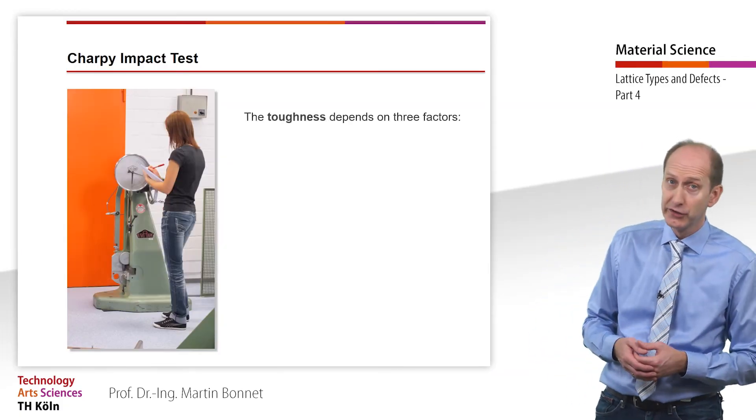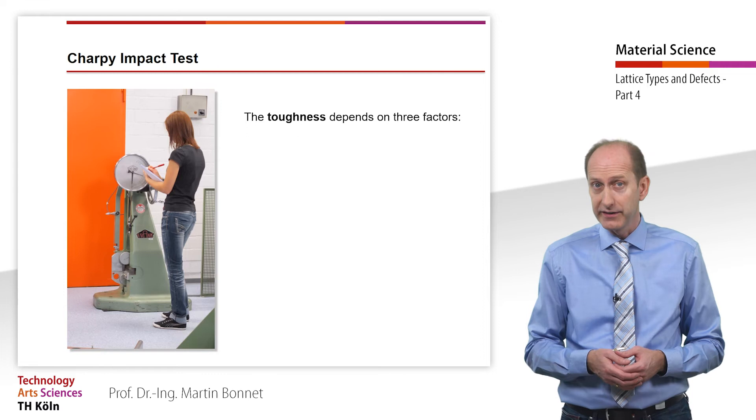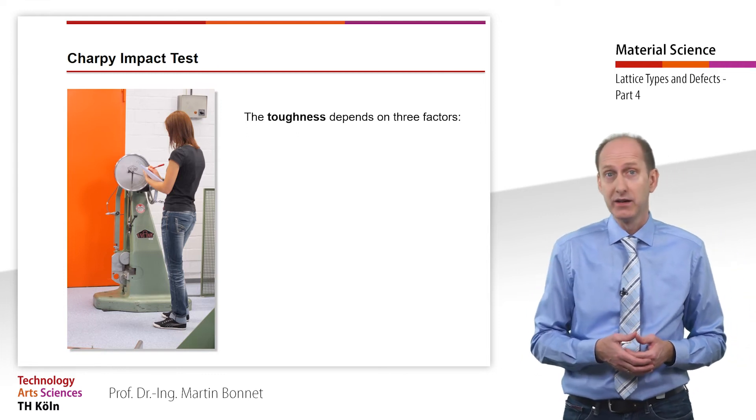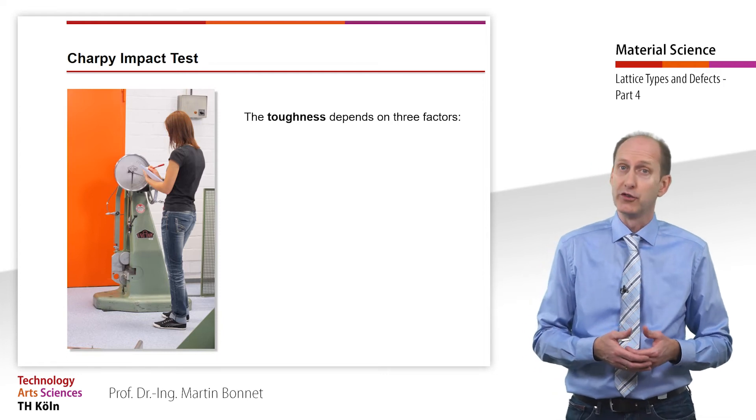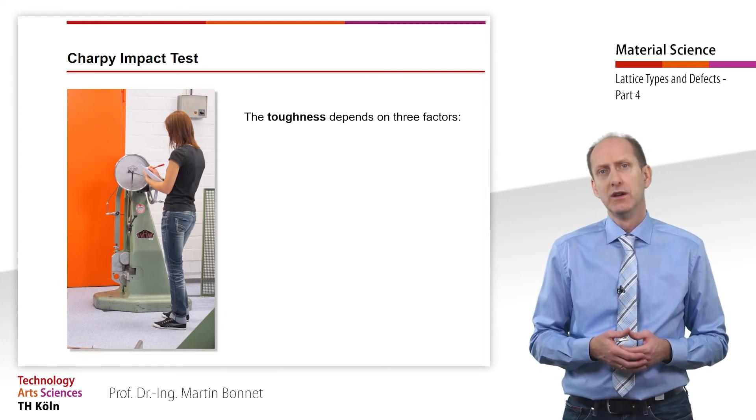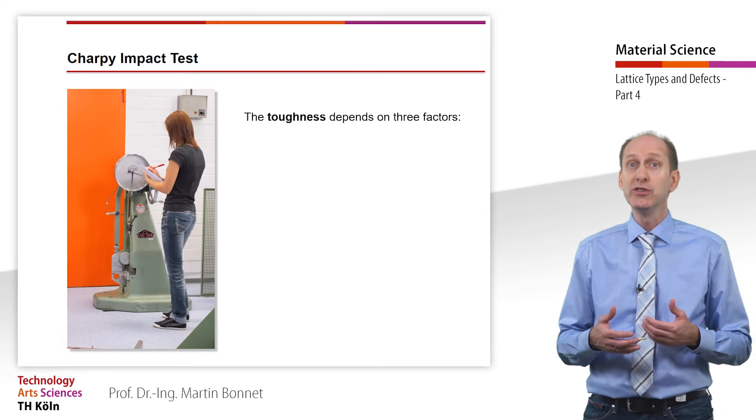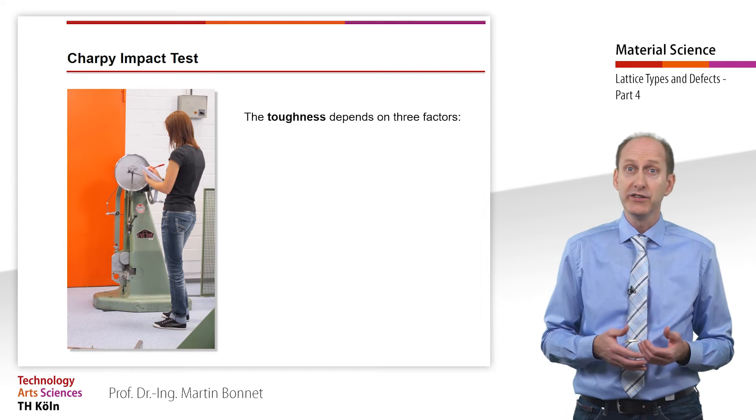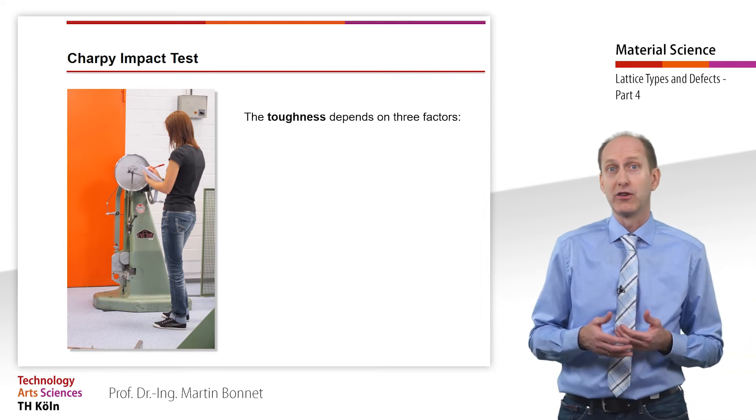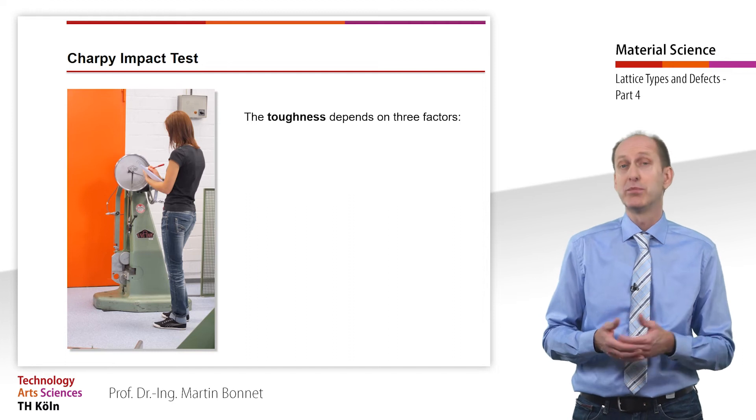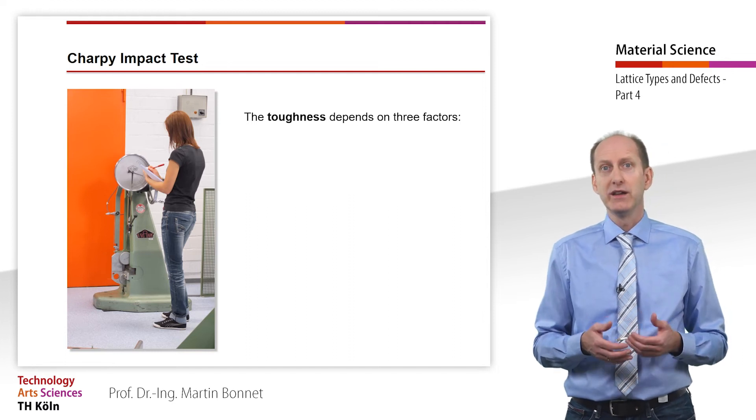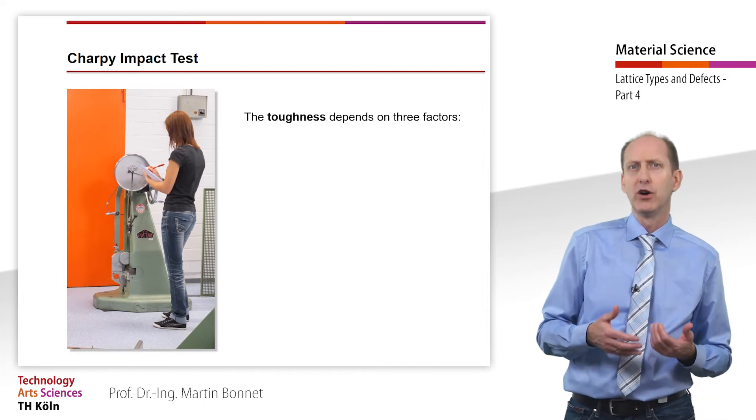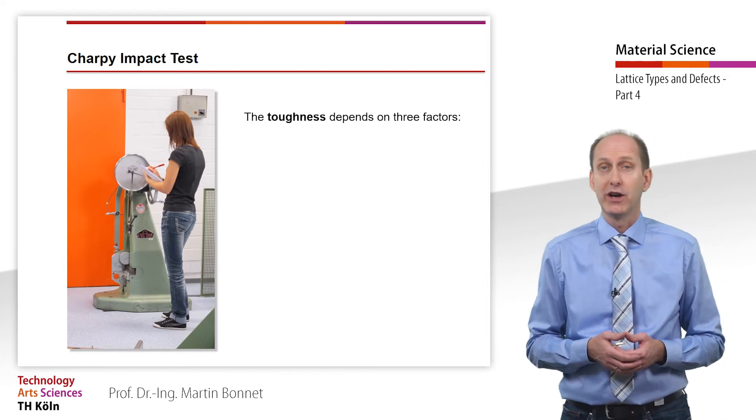Besides the mechanical characteristics resulting from the tensile test, we often need the results of the Charpy impact test in order to determine the right material for a specific application. The use of materials that don't meet the requirements can have fatal consequences. When coldness and strong force impacts are combined, some steels become brittle and break. This is why numerous power transmission towers collapsed in Germany during the very cold and snowy winter in 2005.